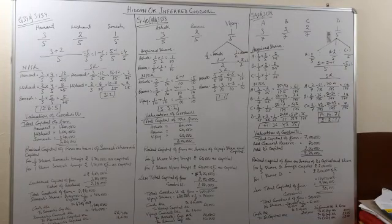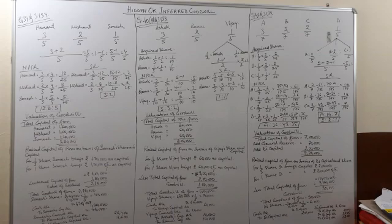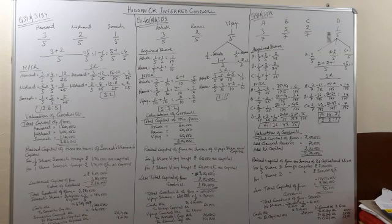We are going to learn a new topic: hidden or inferred goodwill. Hidden goodwill is calculated on the basis of the capital of the firm, that is the old capital plus the new partner's capital, and on the basis of the raised capital of the firm — that is, on the basis of the new partner's share and capital.